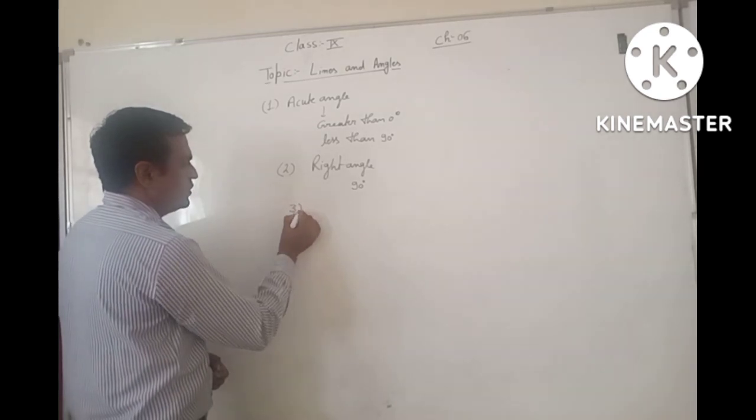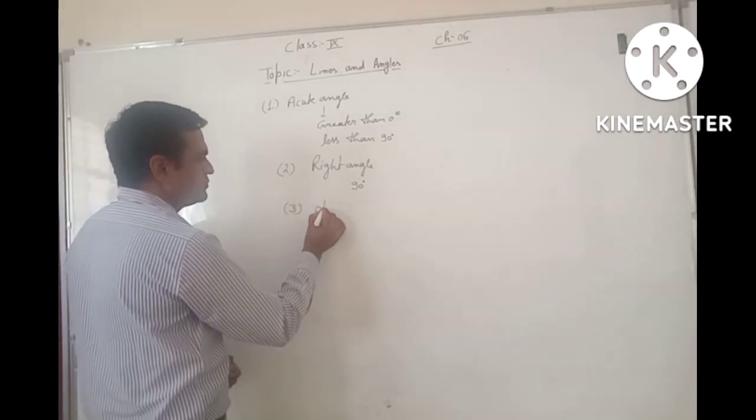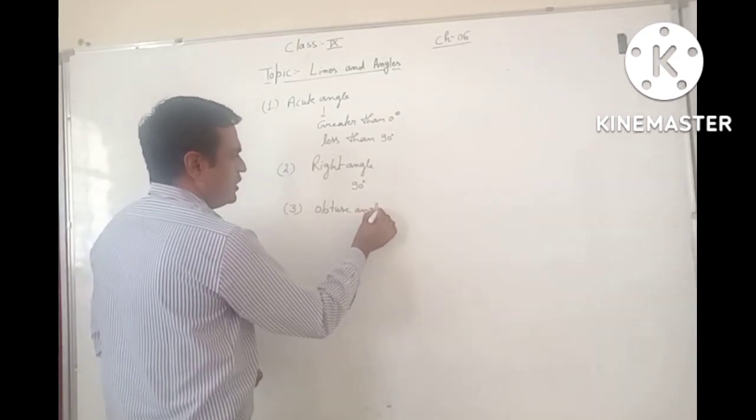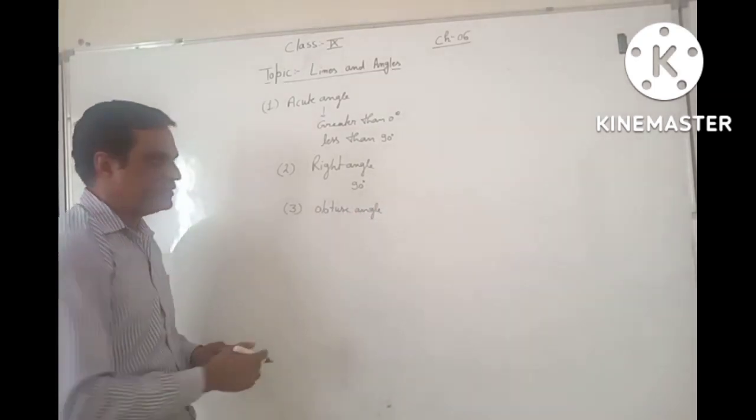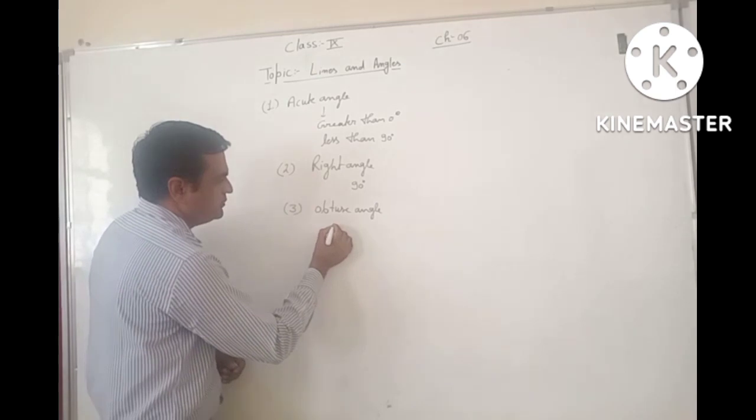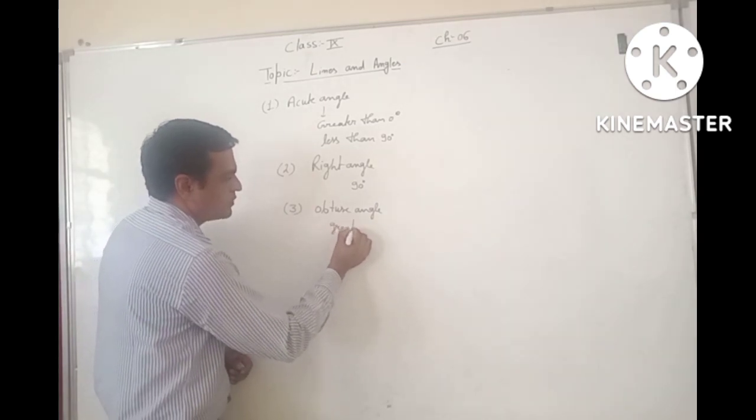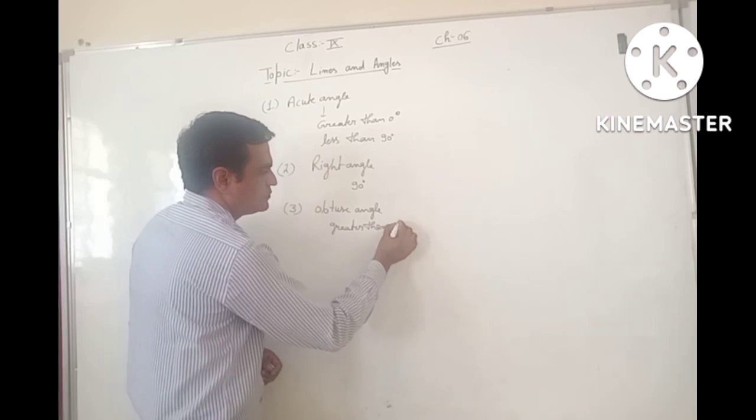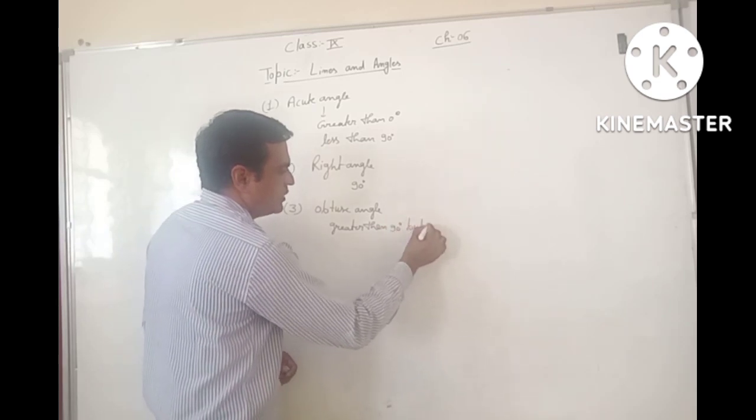Third, Obtuse Angle. Obtuse Angles are those angles whose measure is greater than 90 but less than 180 degree.